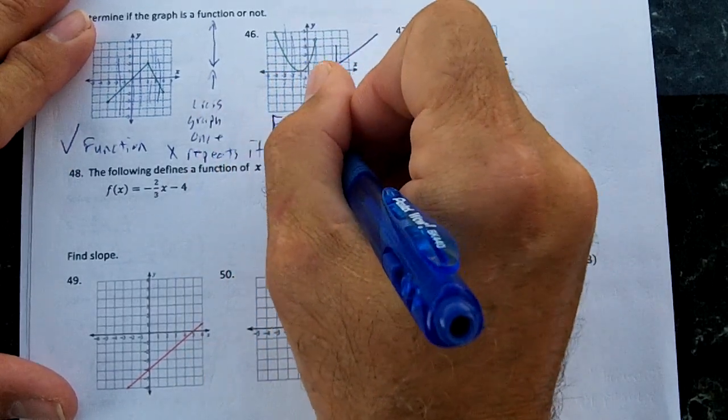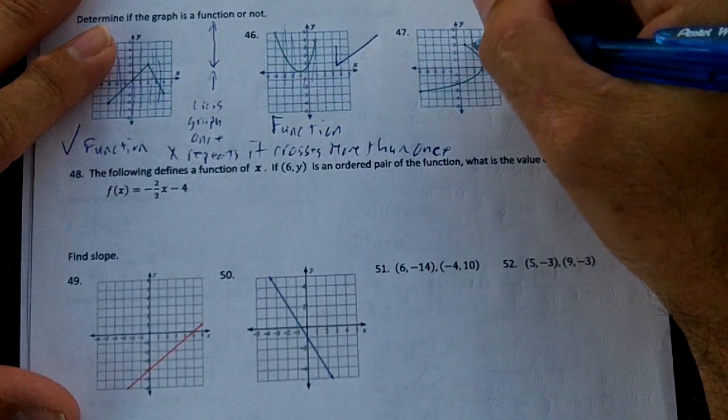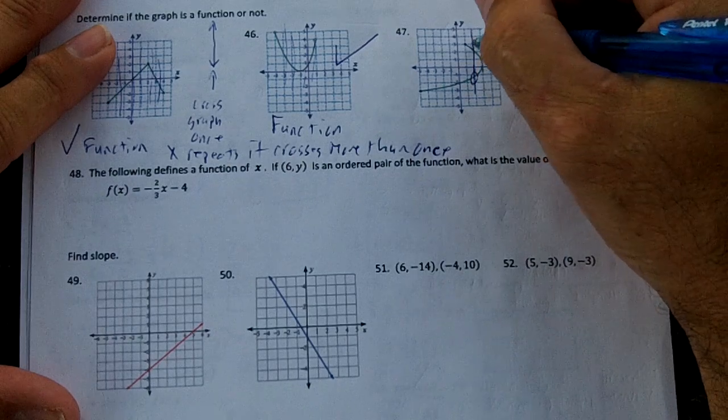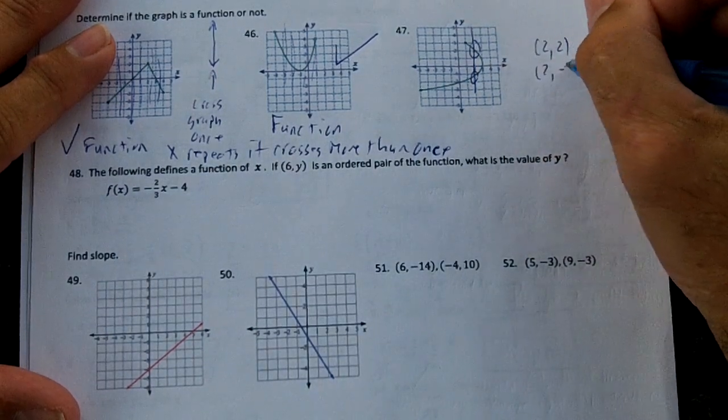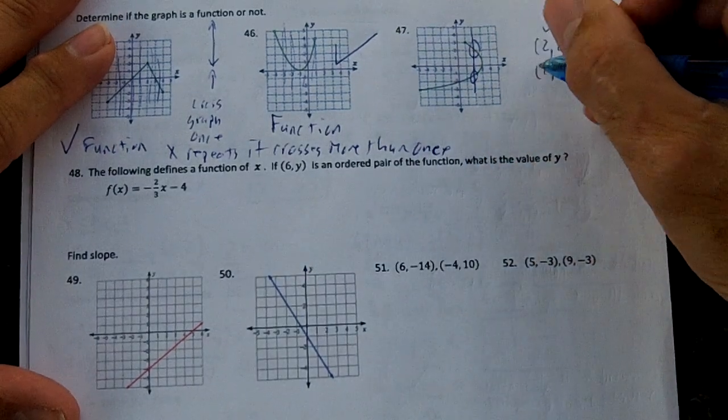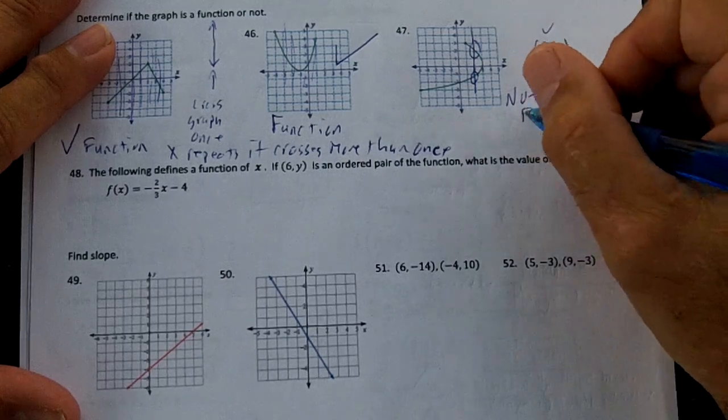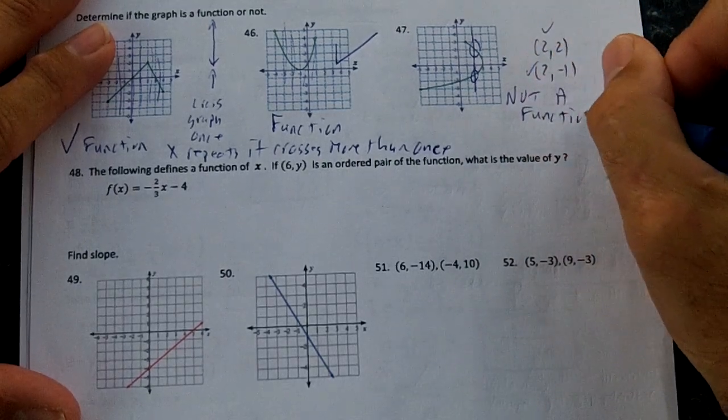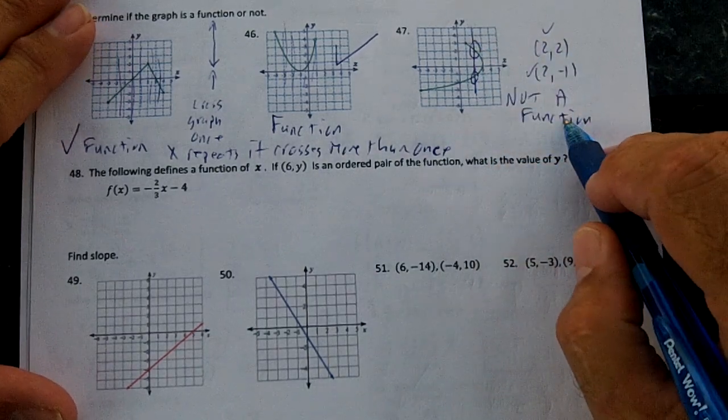You're going to learn about this in the spring. This is a quadratic function. Right here, look right here. I could draw this line and it crosses twice. So I would have (2,2) and (2,-1). The X's are repeating, aren't they? Not a function. So if the X's repeat, that means a vertical line crosses it twice, not a function.